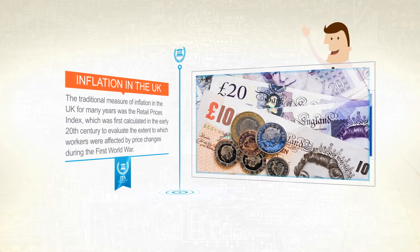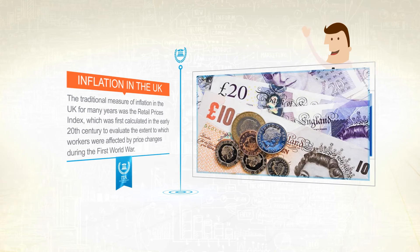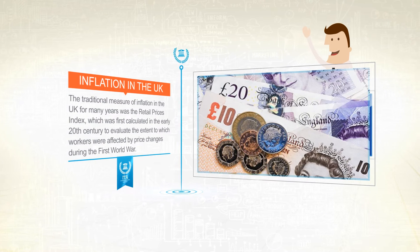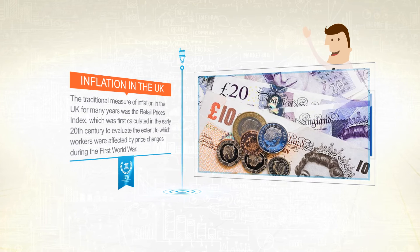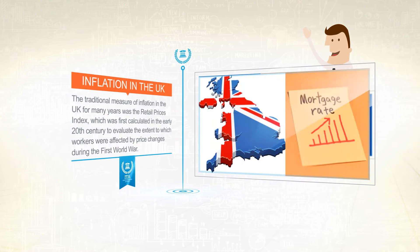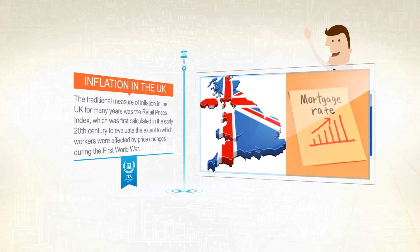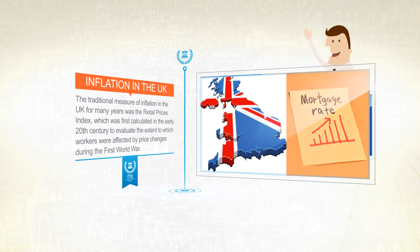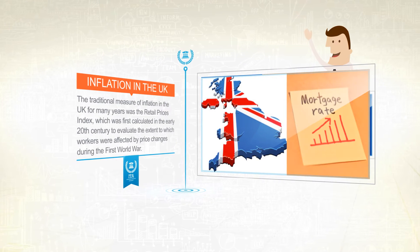Initially, the target was based on the RPIX, which is the RPI calculated excluding mortgage interest payments. It was argued that if interest rates are used to curb inflation, then including mortgage payments in the inflation measure would be misleading.